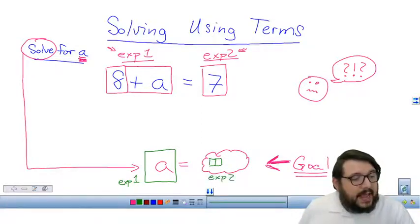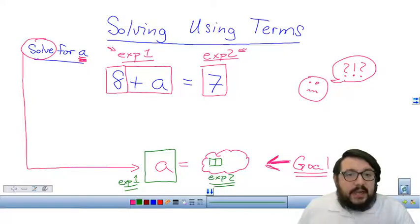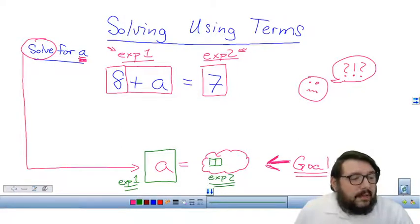Okay, so A has to be a term all by itself. And expression number two is just going to exist on the other side of the equation and then we'll be solved. So what I want to do is look at expression number one and say, well, I just want to have A.